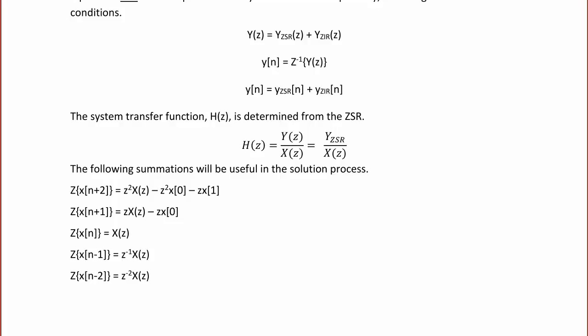The system transfer function H(Z) is determined from the zero state response, and it is the ratio of the output over the input: Y(Z) over X(Z). Since the zero state response does not have any initial conditions, it is also YZSR(Z) over X(Z).